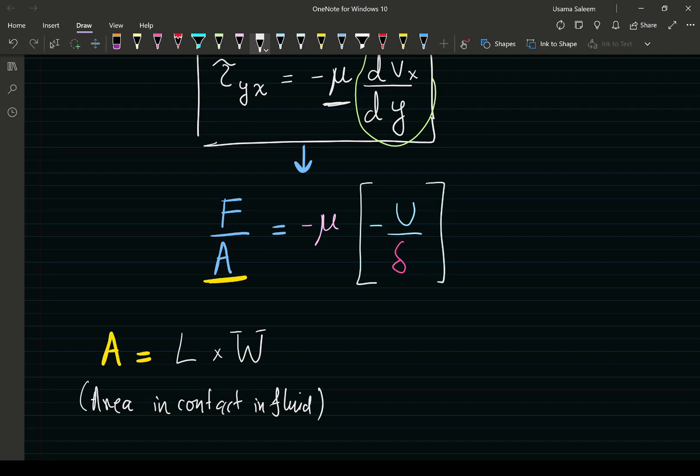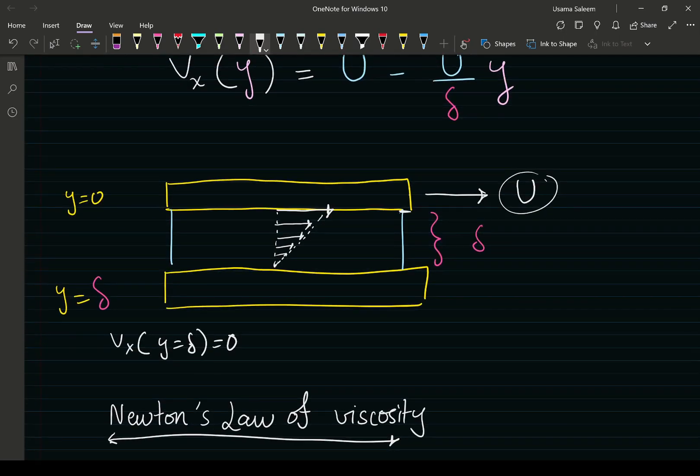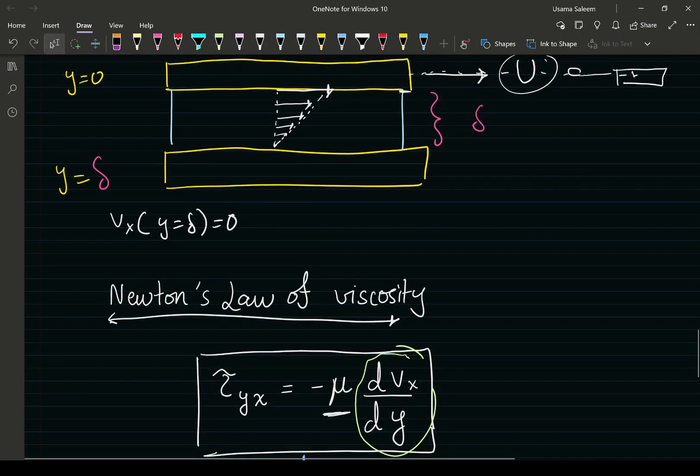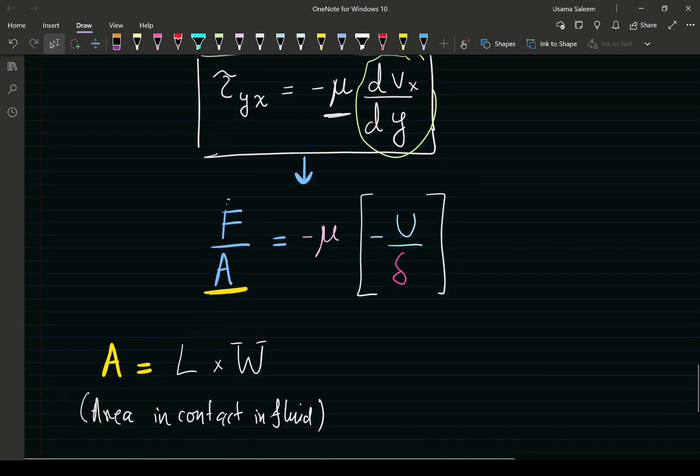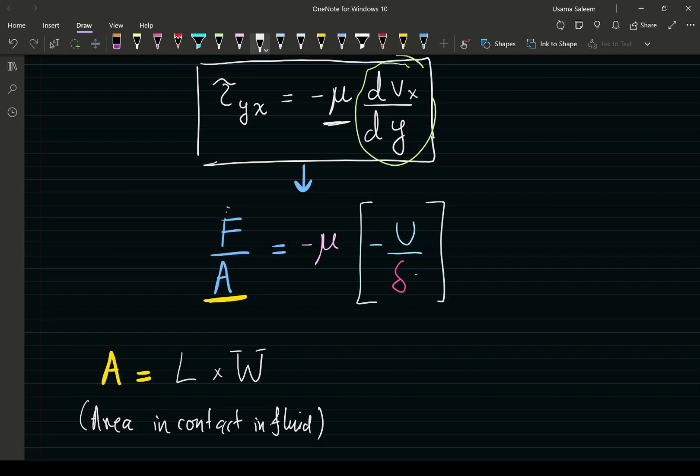Area we know. Force can be measured - you can attach one of those spring balances that you used in physics class. That's going to give you a force reading. Area, some basic geometry, you can calculate that. Delta is also given - you fix that, you can control that. And hence, you can calculate mu.